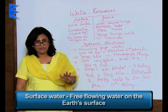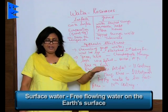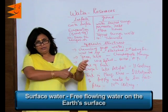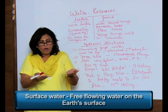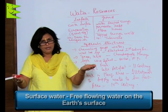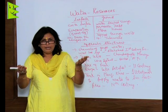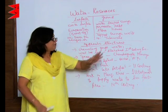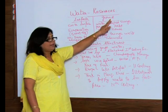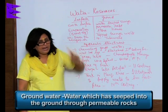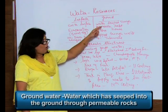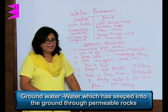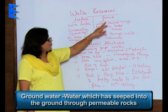Surface water is water which is free-flowing on the ground, on the top of the earth, and it could be in the form of rivers, lakes, or streams. Whereas ground water is that water which has gone into the ground inside the earth.